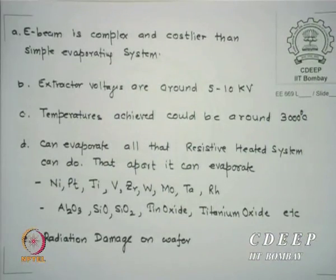If high-energy electrons hit an MOS device in particular, they may charge the oxide — the oxide charge or trapped charge increases, which essentially means the threshold voltage shifts. This is called radiation damage. At 5 kV, the energy is small compared to radiation in space, which is on the order of 1 MeV in Van Allen's belt. But here the distance is very small, so damage still occurs.